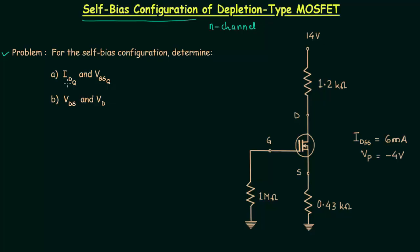In part A we have to find out the current IDQ and voltage VGSQ, which are the coordinates of the operating point. In part B we have to find out voltage VDS and the potential at point D. VDS is the output voltage and VD is the potential at drain.